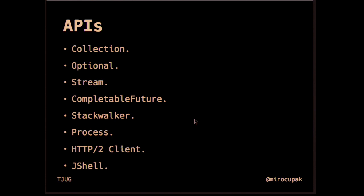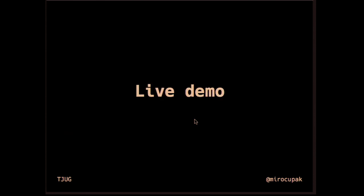All the examples are going to be demonstrated using JShell. Hopefully we'll have some time at the end to also have a look at the API. For each of these APIs, I want to show what the situation was like prior to Java 9, how things changed, and how we can do things differently in Java 9.